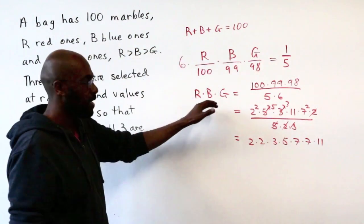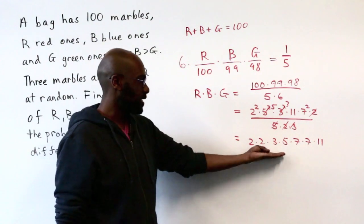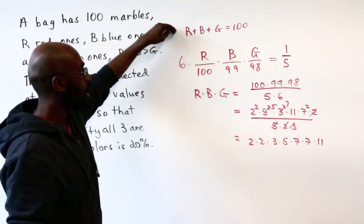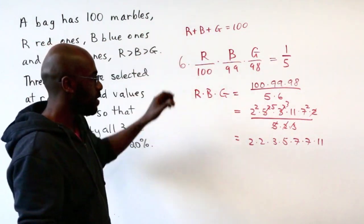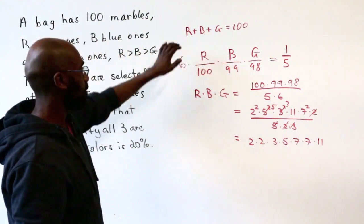Now that we think about it, R, B, and G are whole numbers whose product is precisely this thing here and whose sum is 100. So we're trying to find out ways to clump these numbers together to get a sum of 100.